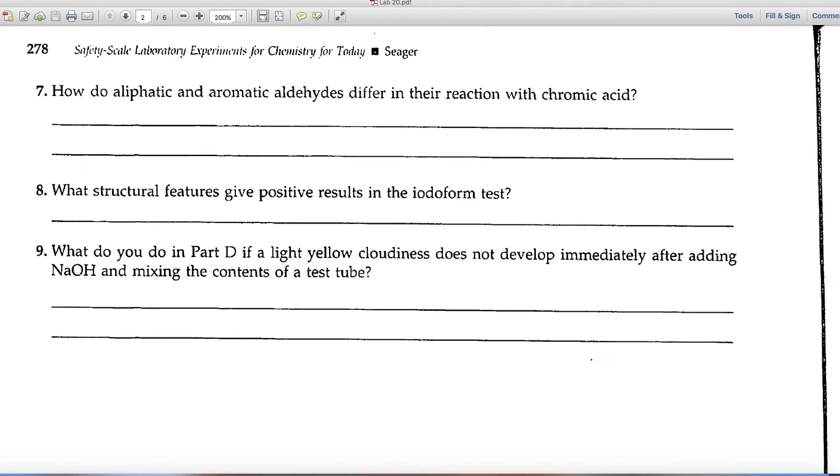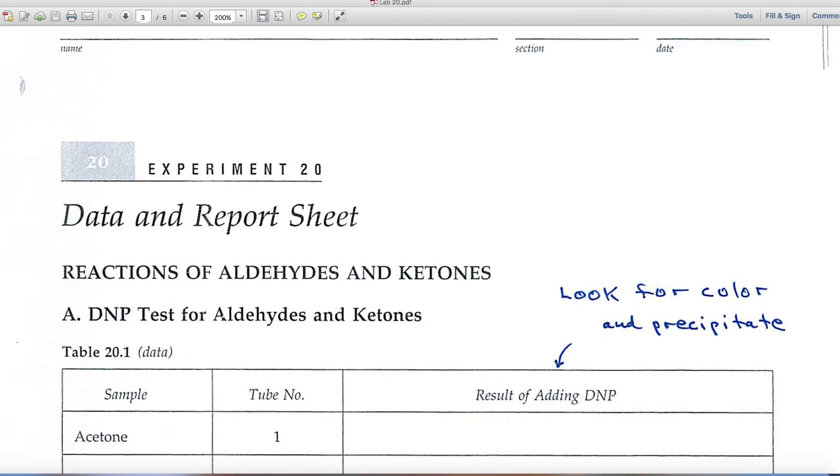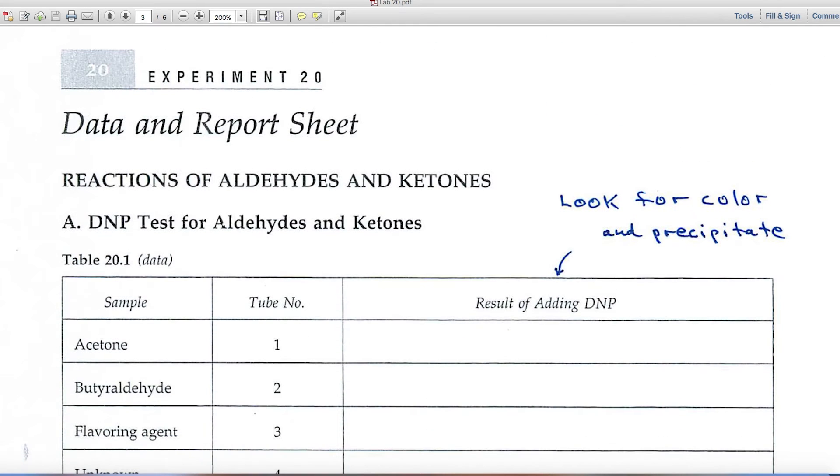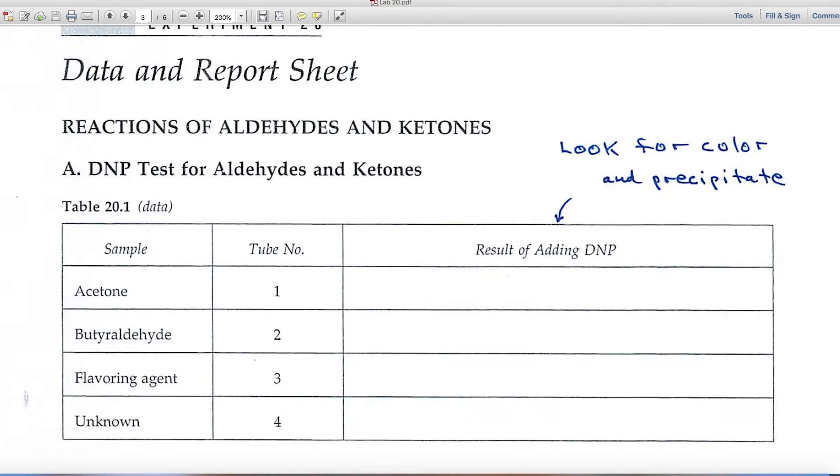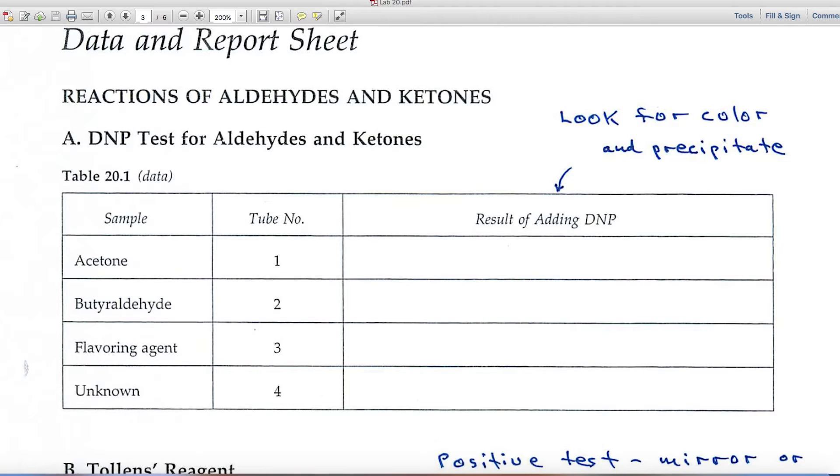And seven, eight, and nine, pretty straightforward. Let's look at the data and report pages. Data is where you're gathering observations from the photos that are provided.